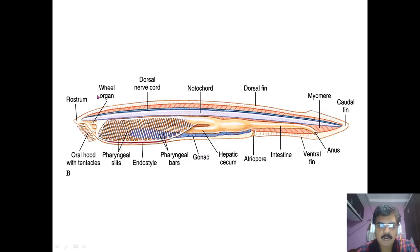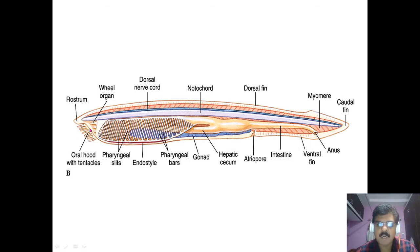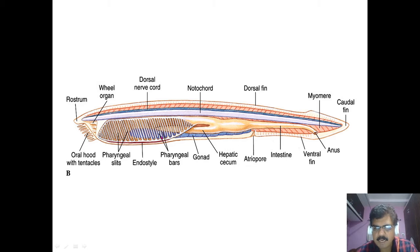At the anterior portion of the body, the terminal end is called the rostrum, and on the ventral side it has the oral hood. Around this oral hood it is made up of tentacles, called oral tentacles, within which the wheel organ is present. Then there are the pharyngeal gill slits, and on the ventral side there is an endostyle and pharyngeal bars.